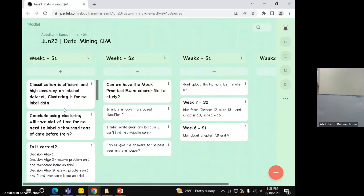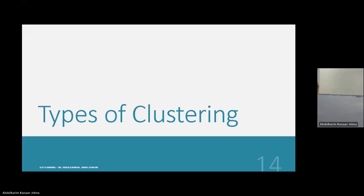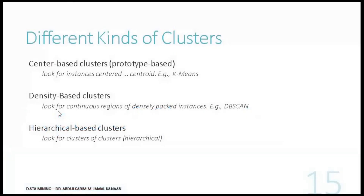Now let's look into the types of algorithms — we already discussed all of them during the practical session. The first type is center-based or prototype-based clustering, like K-means, which depends on the idea of centroids. Density-based clustering looks for continuous regions of density, like DBSCAN. We also have hierarchical clustering, which produces nested clusters — clusters of clusters.